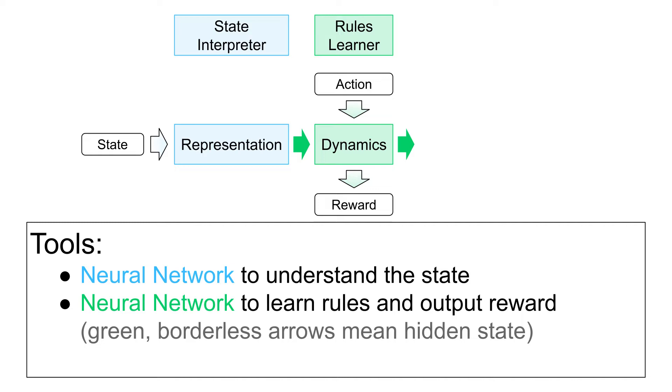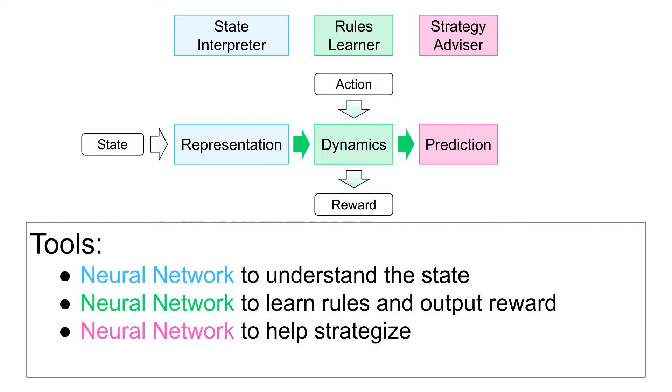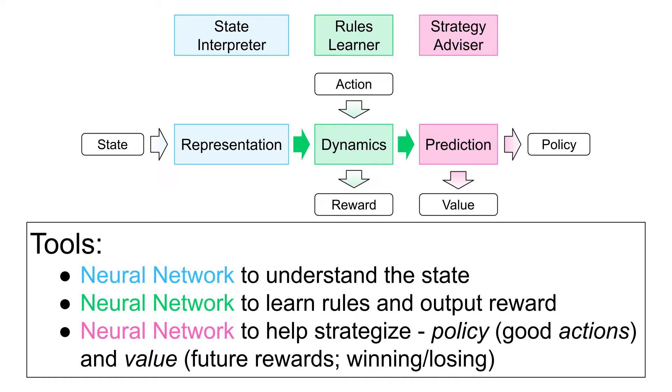The hidden state also feeds into the prediction network, which I think of as the strategy advisor, because its outputs are used to make strategic moves, also called actions. One of the predicted outputs is called the policy. These are the most promising actions from a given state. The other predicted output is called the value, a number that predicts future rewards. Put another way, the value indicates if a state is closer to winning, or to losing.